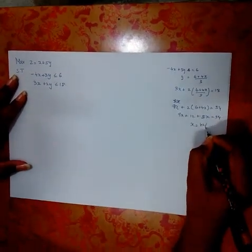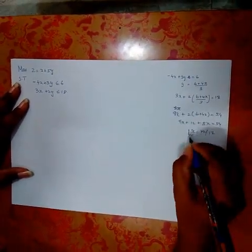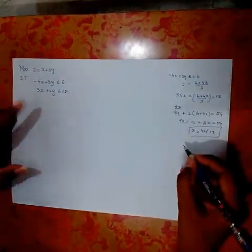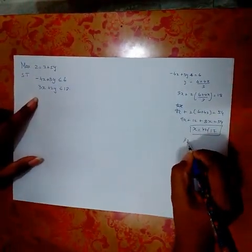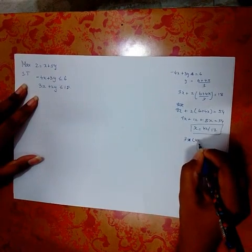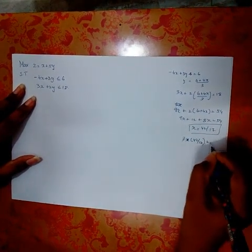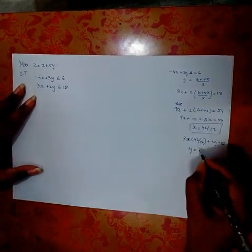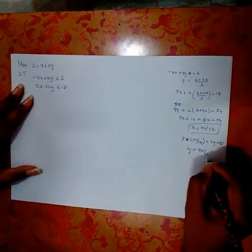Solving this I would get x = 42/17. Applying this in the second equation, 3x + 2y = 18, where x is 42/17.